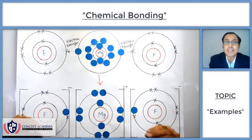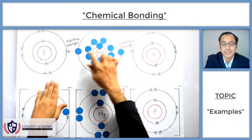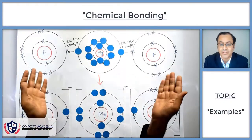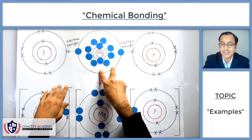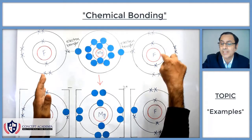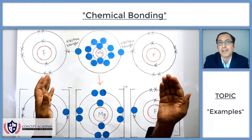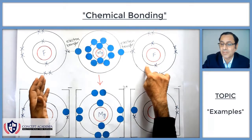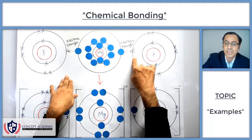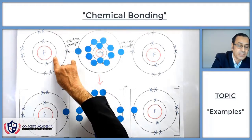As another example, consider magnesium and fluorine. Magnesium belongs to group 2, has two electrons in its last shell, and is ready to give away both. Fluorine has seven electrons in its last shell and requires just one more electron to complete its octet. Since one fluorine atom only needs one electron but magnesium wants to give two, magnesium gives one electron to the first fluorine atom.